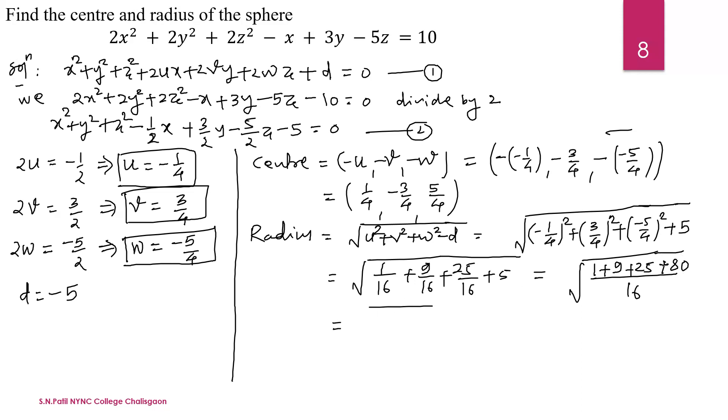Now simplify. Then we get 80 plus 25, 105 plus 10, that is 115 divided by 16. The square root of 16 exists in the denominator. The square root of 16 is 4 and keep this square root term 115 as it is. Which is the required radius of the sphere. And this is the center of the sphere. Thank you. Thanks for watching the video.